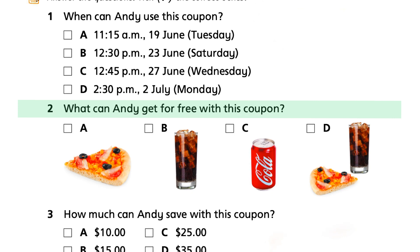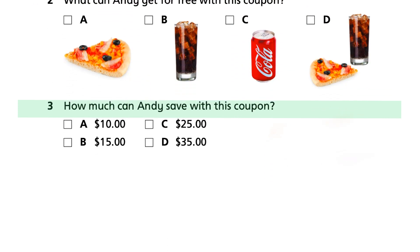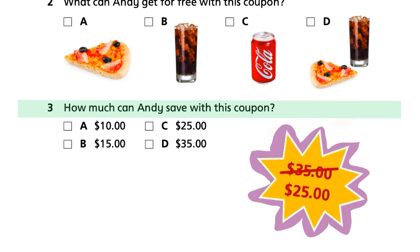Question 2: What can Andy get for free with this coupon? For this question, look at the explosion bubble in yellow in the coupon. What is the difference between the two prices? The price $35, crossed out, is the original price of a slice of pizza and a glass of cola. The new price, $25, is the one when we use the coupon.